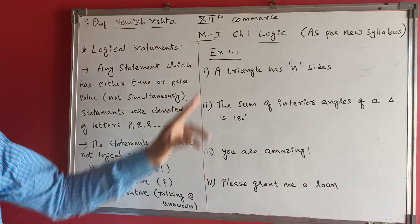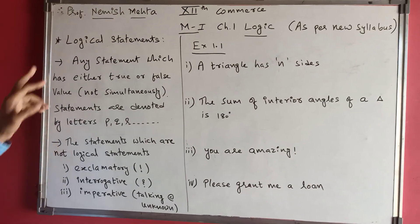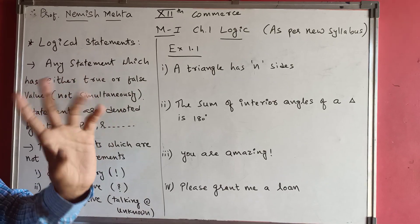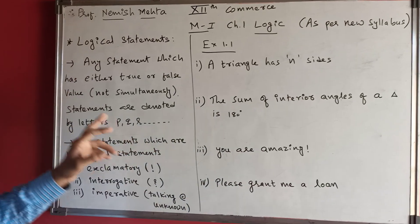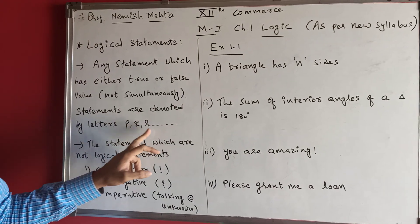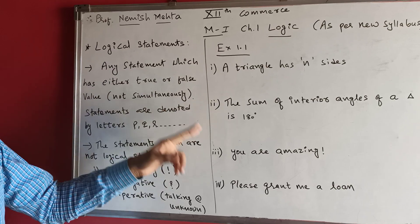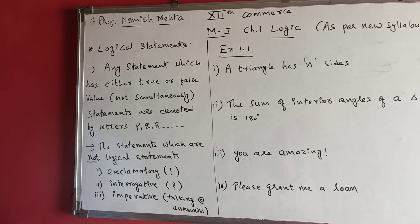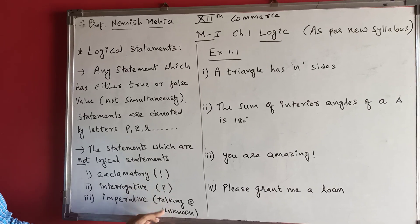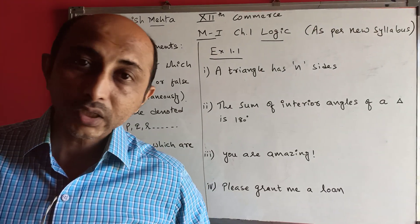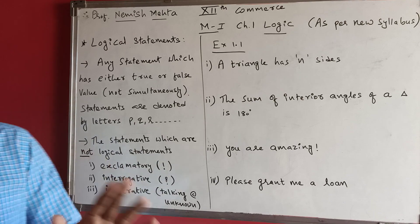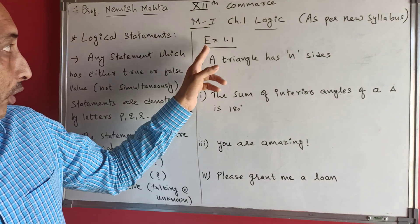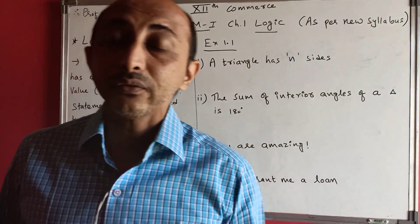Let us start with Example 1.1. A logical statement has either a true or false value. Statements are denoted by letters P, Q, R. Statements which are not logical statements include those with an exclamatory sign, a question mark, or those involving requests, orders, or reference to an unspecified third person. Now let us start Exercise 1.1, which has a total of 25 questions.